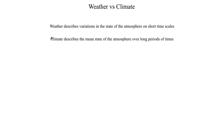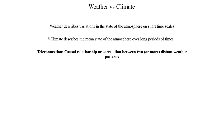You might be wondering: weather covers at longest weekly variations, and climate covers at shortest variations of decades — so what about the timescales in between? That's where we introduce the idea of an oscillation. But first, let's introduce another definition called a teleconnection, which is typically defined as a causal relationship or a correlation between two or more distant weather patterns.